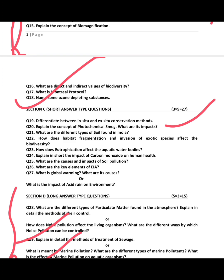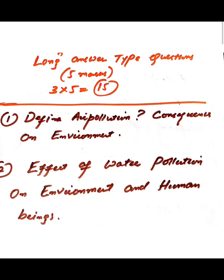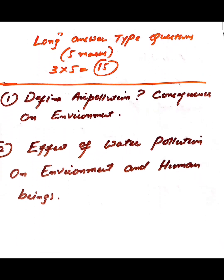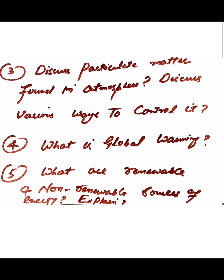Now here are the important questions from this topic. These are long answer questions. First question: define air pollution and its consequences on the environment. Second question: effects of water pollution on environment and human beings. Third question: discuss particulate matter found in the atmosphere and discuss various ways to control it.